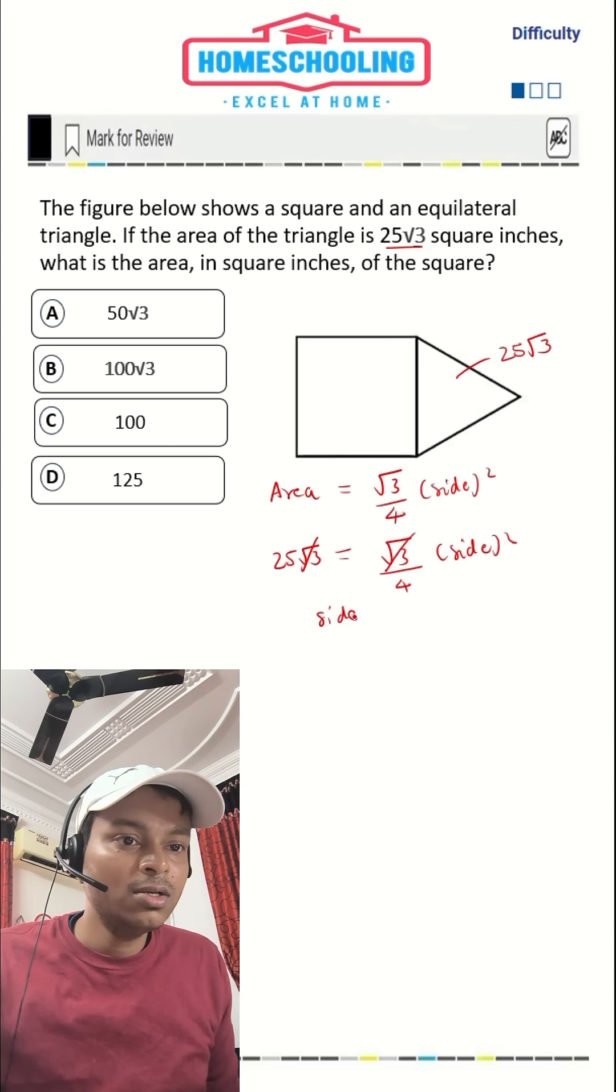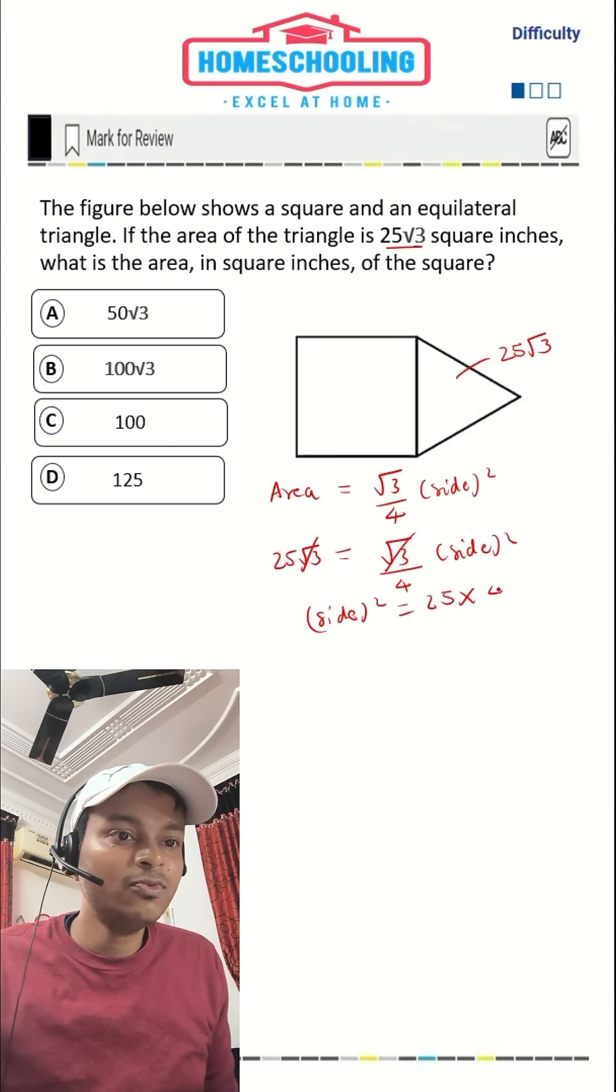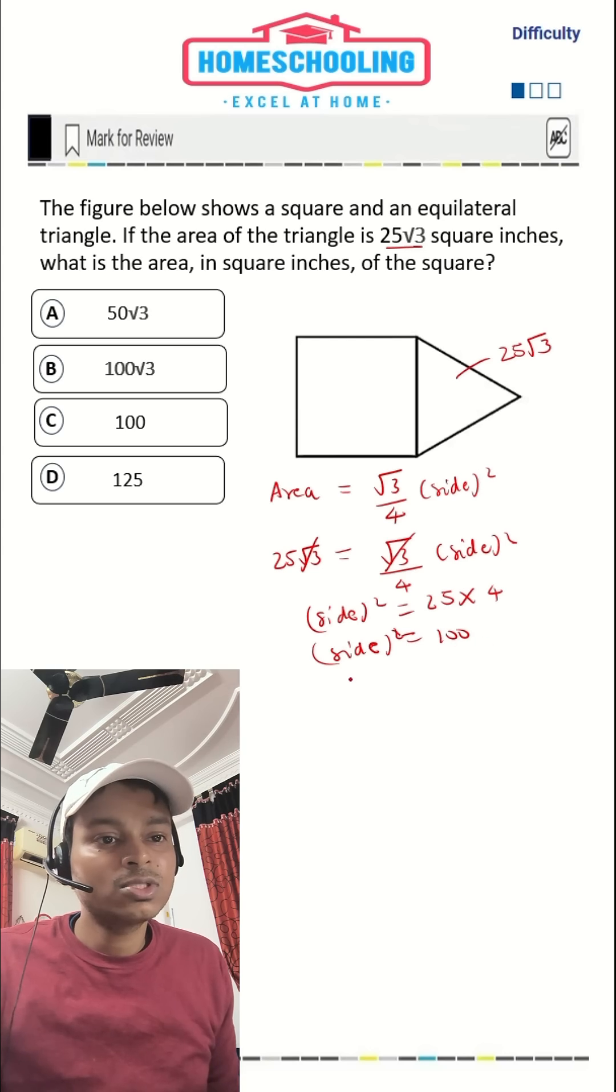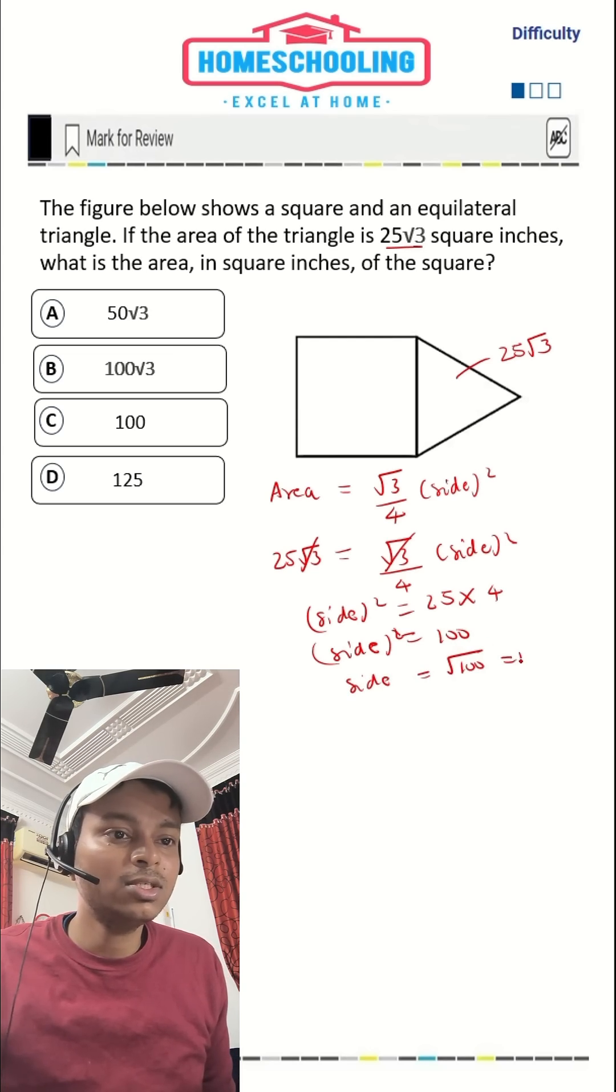So side² = 25 × 4, that is going to be 100. Side² is 100, so side would be √100, that is equal to 10.